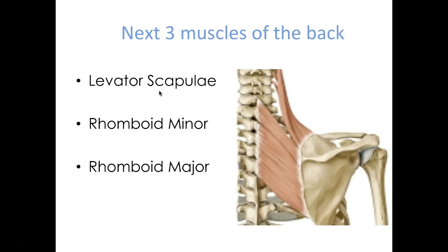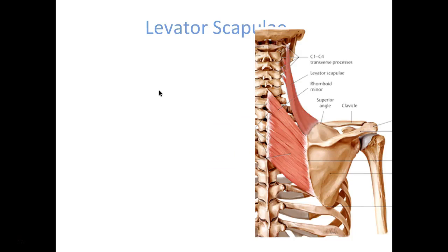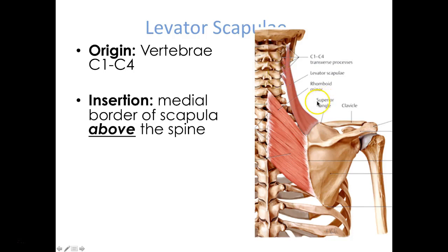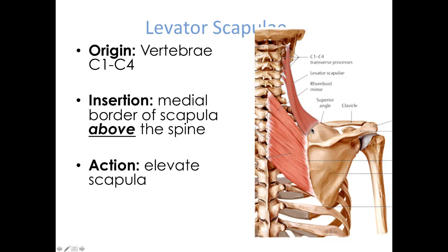The other three muscles on our back are levator scapulae, rhomboid minor, and rhomboid major. Levator scapulae — I always think it sounds like 'elevator,' so we start at C1 and take the elevator to C4. All of these insert on the medial border of the scapula, but at different areas. Levator scapulae inserts above the spine. Its action is to elevate the scapula — a perfect name! Innervation: branch of the brachial plexus.